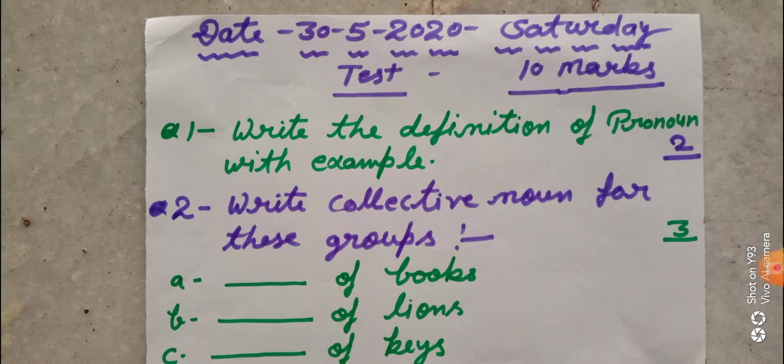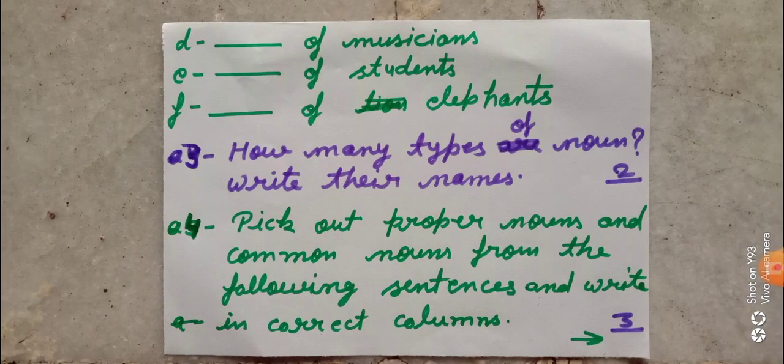I am just giving you some examples. Aapko collective noun ka yeh question kis tarah se karna hai — jaise group of fish: fish ke group ko hum kya kahte hain? Shore. And group of ants, we say colony. Tau isi tarah se aapko group of books — books ke jo group hai usko hum kya kahte hain — woh aapko word yahan par likhna hoga. In the same way you will do all these groups.